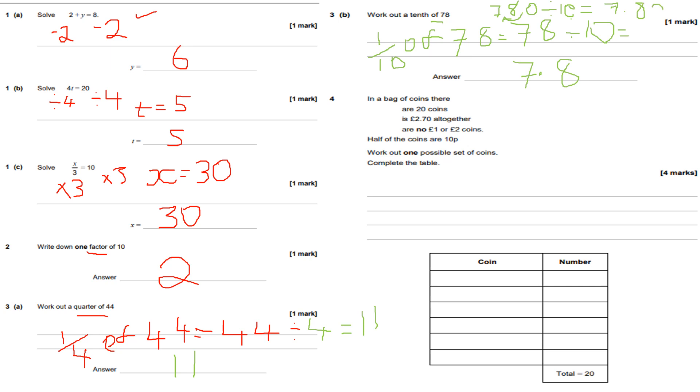Question number four: in a bag of coins there are 20 coins. It's 2.70 altogether. There are no one pound or two pound coins. Half of the coins are 10ps. Work out one possible set of coins. Complete the table. If there's 20 coins, half of them are 10ps, so 10 lots of 10p. That will give me one pound. That means the remainder will be one pound 70. Remember, 100 pence is equal to one pound.